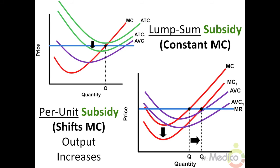A per unit subsidy encourages more production by lowering marginal costs — it shifts the MC curve downward. This increases the firm's level of output and increases economic profit. The average total cost and average variable cost curves also shift down, but it's the marginal cost curve that changes the profit-maximizing level of output, as the MR equals MC point moves to the right. A lump sum subsidy does not change a firm's level of output because it does not change marginal cost. It reduces fixed costs and shifts the average total cost curve down, increasing economic profit but not changing output.